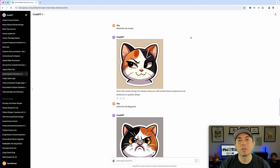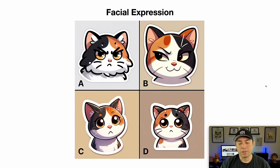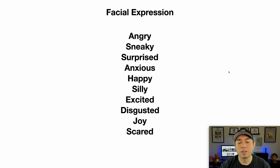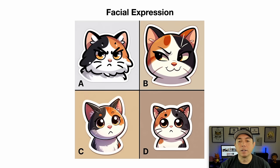Here are some facial expressions you can use: angry, sneaky, surprised, anxious, happy, silly, excited, disgusted, joy, and scared. There are many more — you can actually go to ChatGPT and say 'give me 10 facial expressions' and it would list them out. It doesn't have to be a cat either — it can be a dog, a fruit, a skeleton. Things that have facial expressions will make people want to buy because they connect with that expression. People connected with the sneaky cat because some people are really sneaky and find that cute.